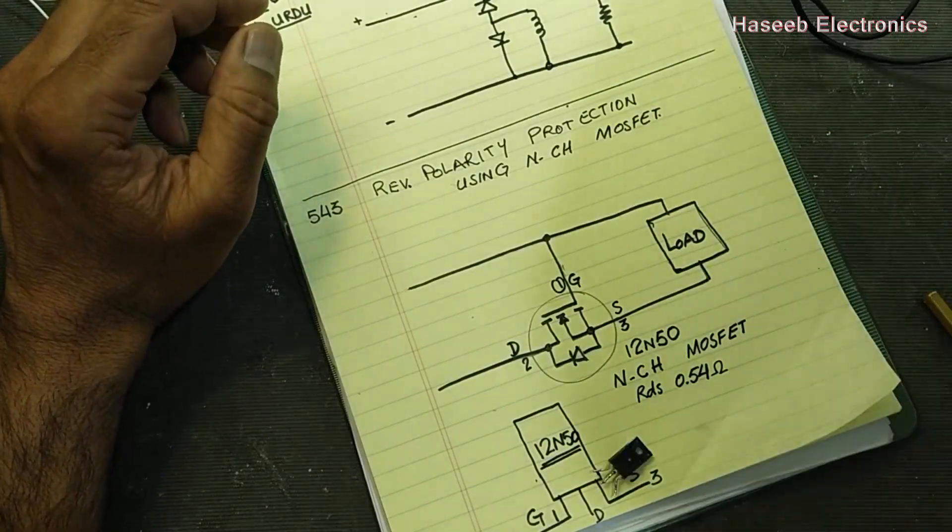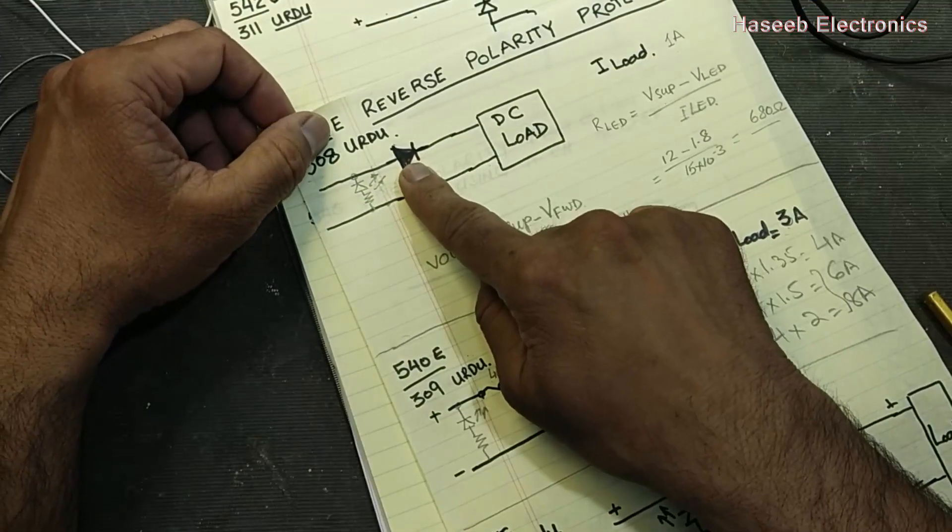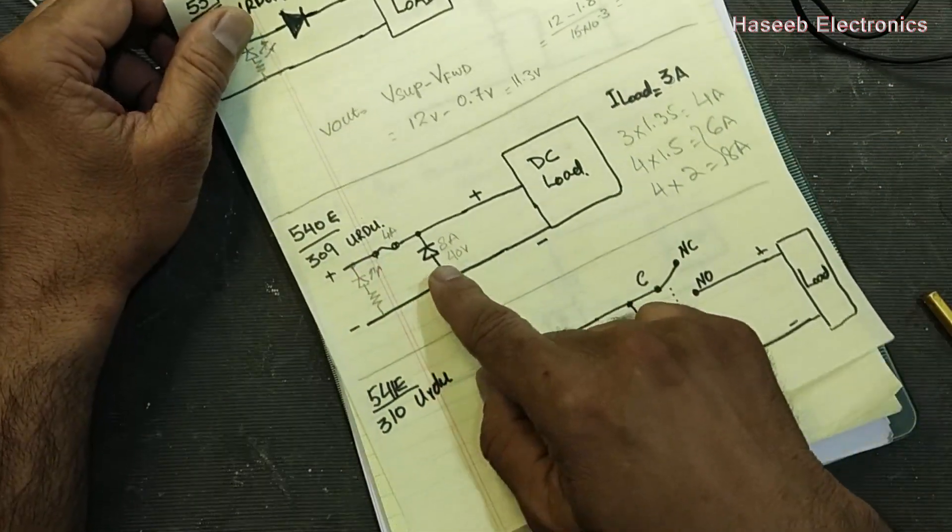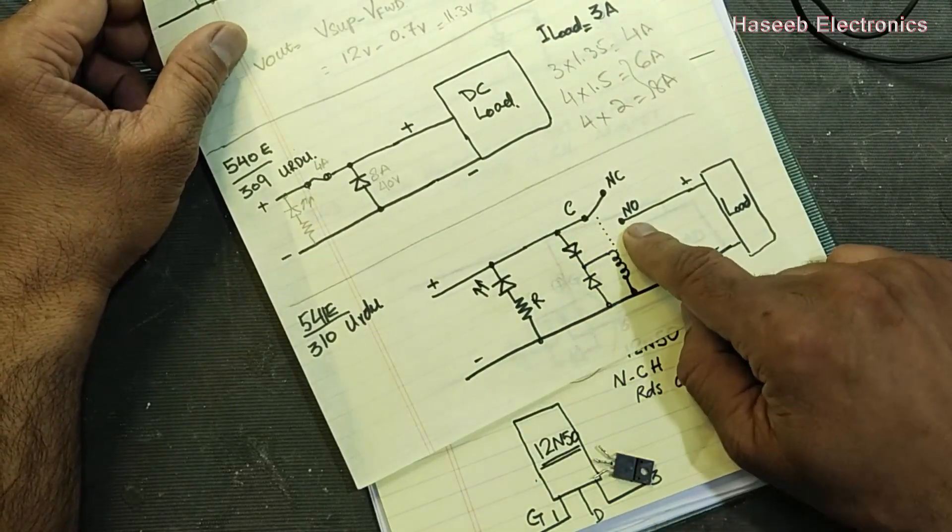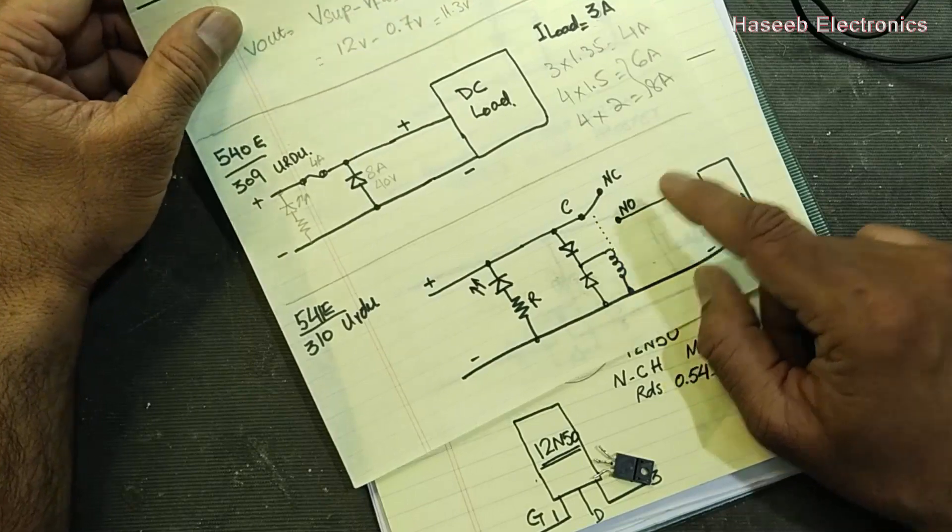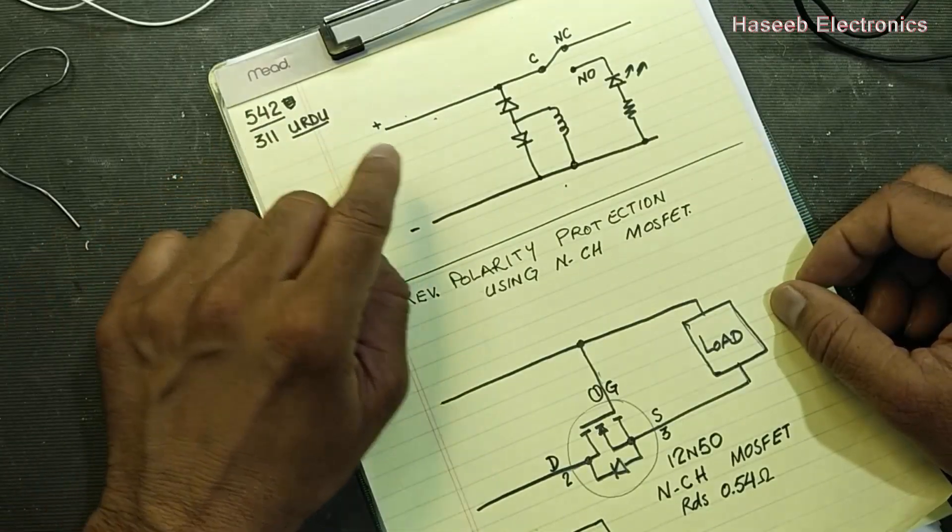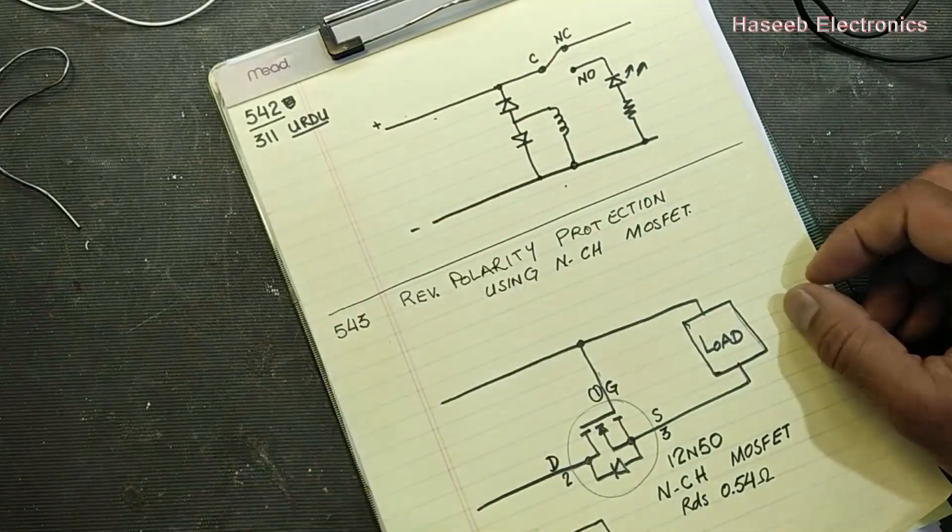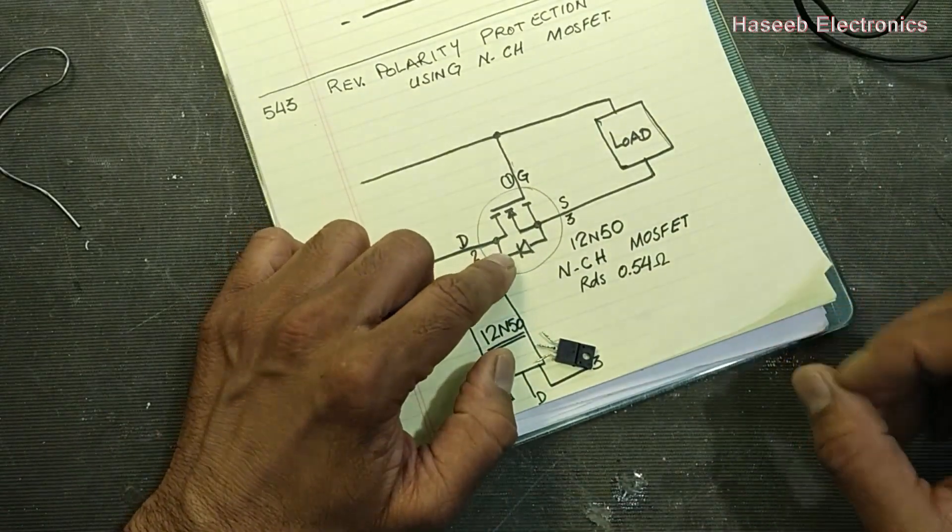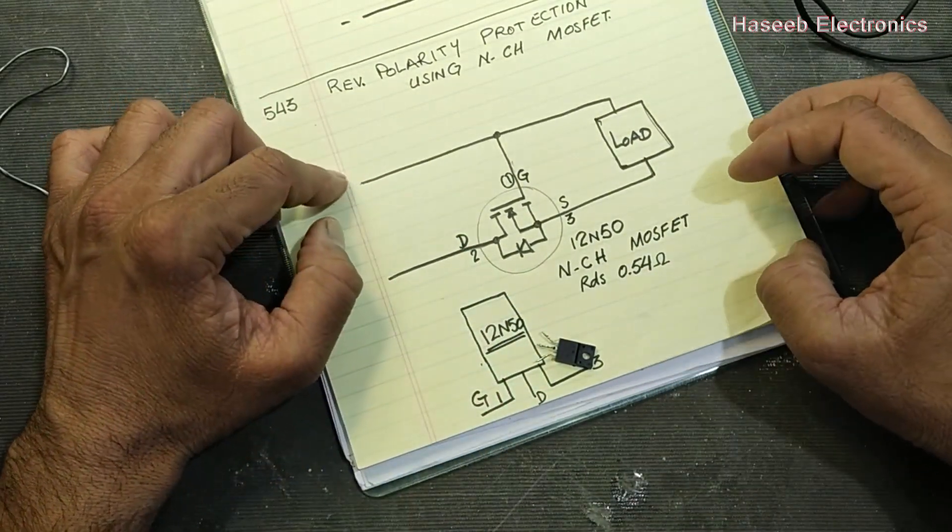We discussed using diode as a shunt and relay using normally open points in video number 542. We discussed relay using normally closed points, and today we will discuss how we can protect our DC circuit using an N-channel MOSFET.